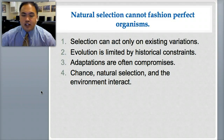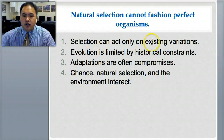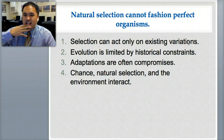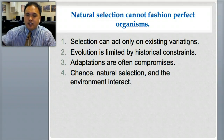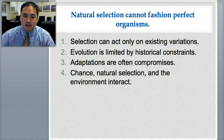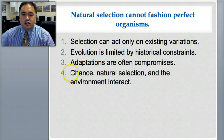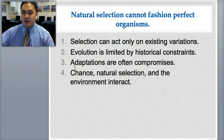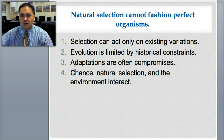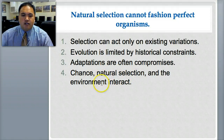Natural selection cannot fashion perfect organisms. There are four properties or rules to know. First, selection can only act on existing variations — natural selection can't just create a new color; it has to already exist. Second, evolution is limited by historical constraints. Third, adaptations are often compromises — if you adapt one thing, something else is usually weakened as a result. Fourth, chance, natural selection, and the environment all interact.